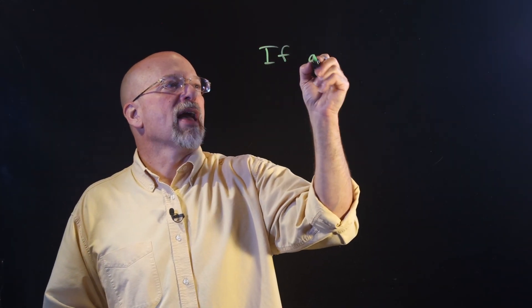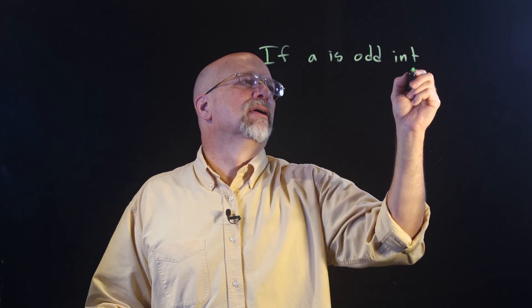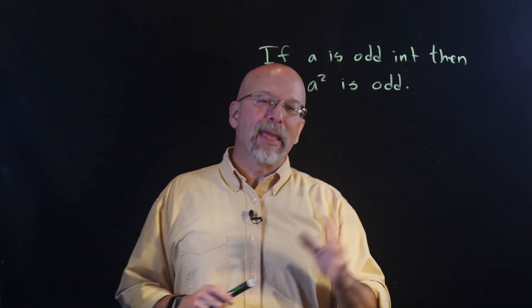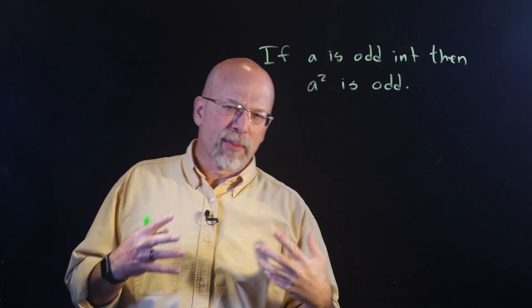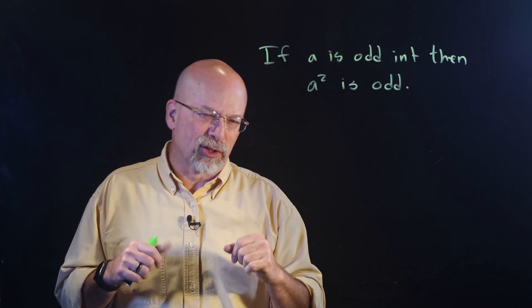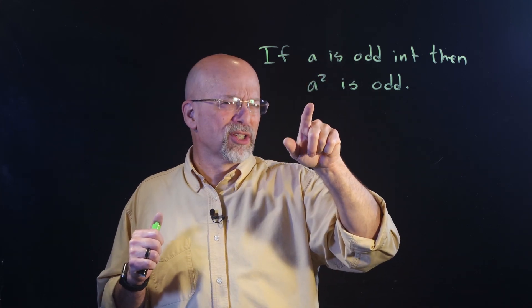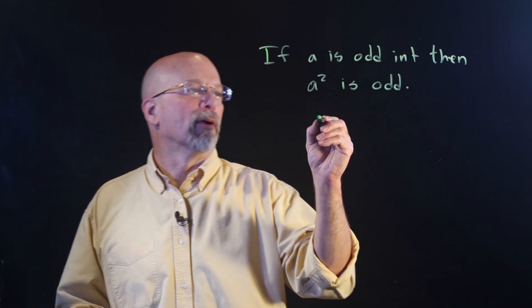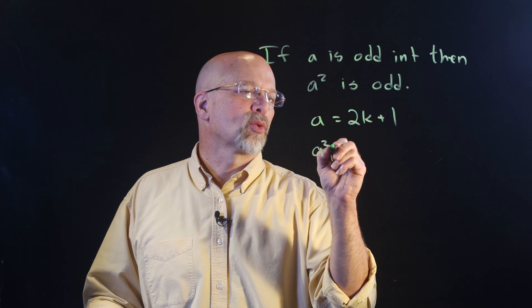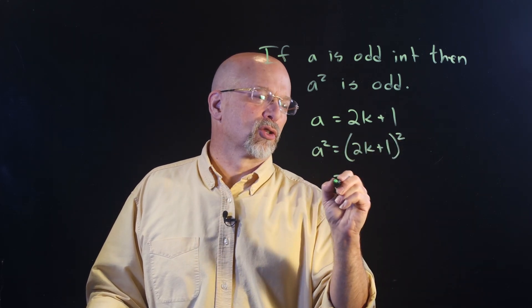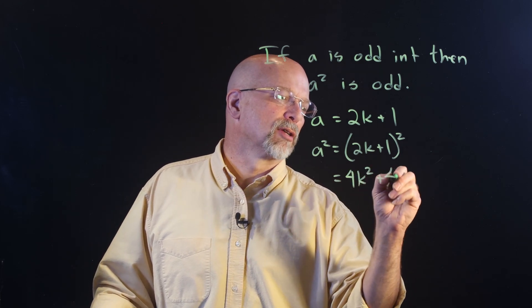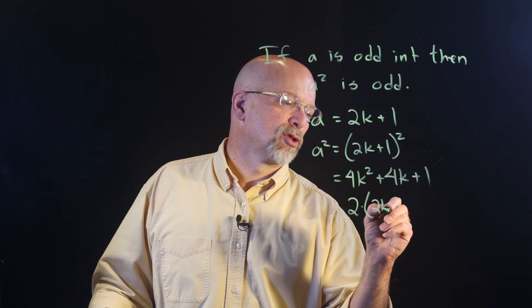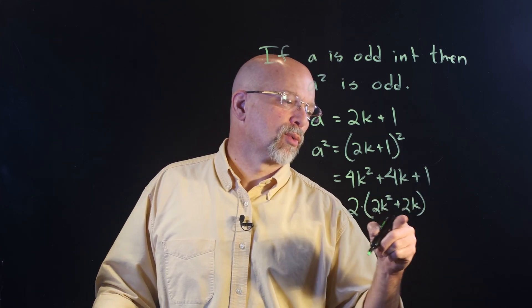How about: if A is an odd integer, then A squared is odd. Intuitively, in order for something to be even it has to have 2 as one of its factors. If 2 is not a factor of A, then 2 is not a factor of A squared. But can we do this using a direct proof? A equals 2K plus 1. A squared equals (2K+1) squared. Multiplying that out gives us 4K squared plus 4K plus 1. We take the first two terms and pull a 2 out: 2 times (2K squared plus 2K).